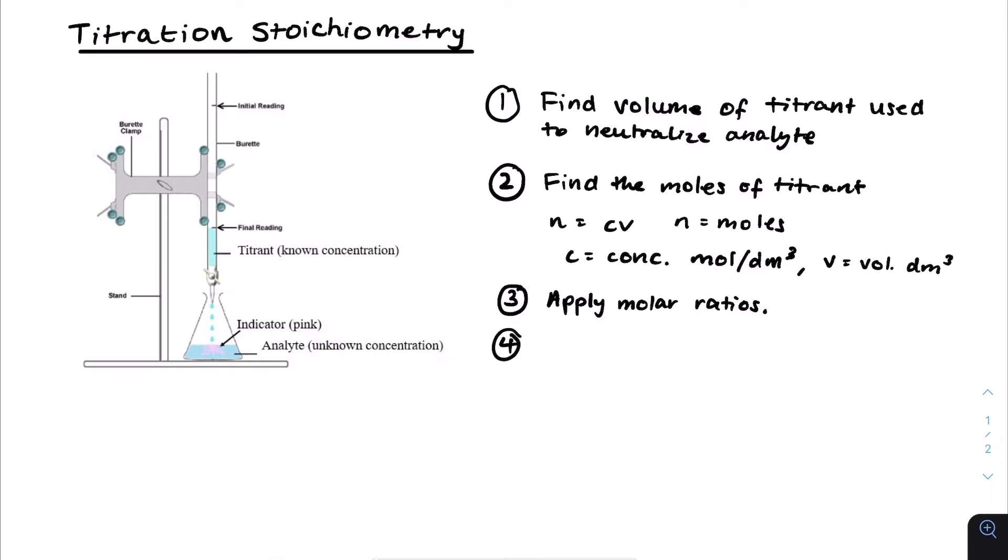Step four is simple, just calculate the concentration. As we know N equals Cv, we can rearrange to get C is equal to N over V, where we know what C, N, and V are as defined in step two.